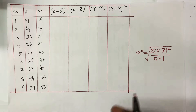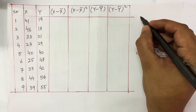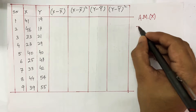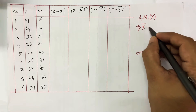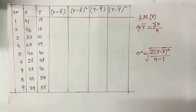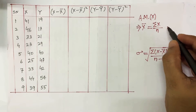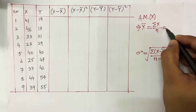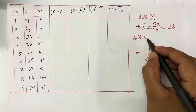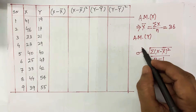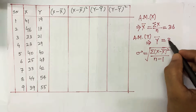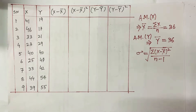Now if I try to see which group has performed better, I can simply calculate the arithmetic mean using my previous knowledge of statistics. The formula for X-bar is the sum of all values divided by n — summation of marks divided by number of students. Calculating this gives a value of 36. Similarly, calculating Y-bar, the average marks of students in Group Y, also comes out to be 36.